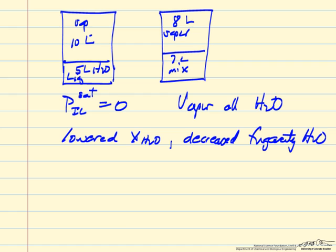If this were an ideal system, the pressure of the water above it would be related to the mole fraction of the water and the saturation pressure. Well, we can't argue that it's ideal, but we do argue that we've decreased this enough that we've lowered the vapor pressure.